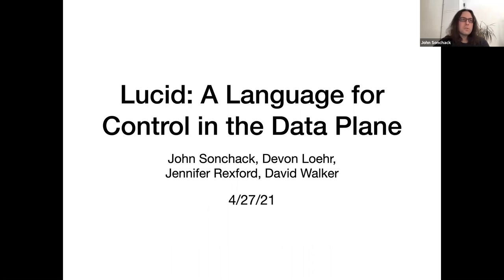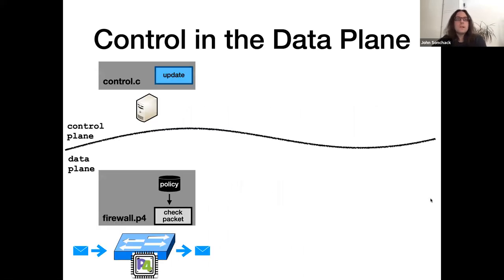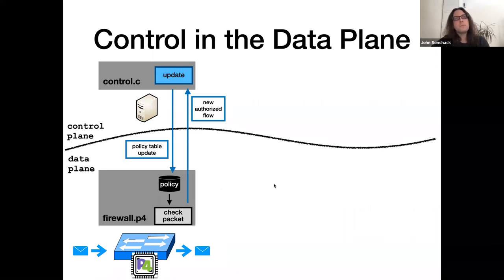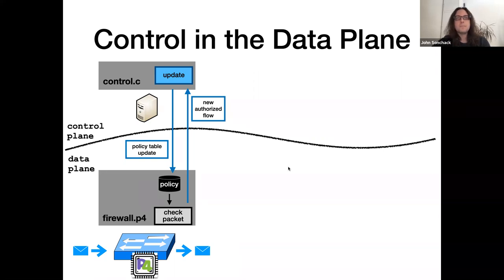Usually when we think of a data plane application that runs on specialized hardware like a P4 ASIC, we think of a program that basically has one thread and processes packets using remotely managed state. For example, we might imagine a firewall in P4 that parses each packet, extracts its key, and then based on that key, looks up some policy in a table to decide whether to drop or forward the packet. That policy is typically remotely managed.